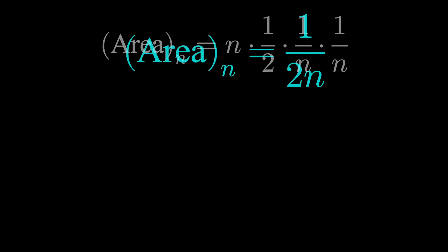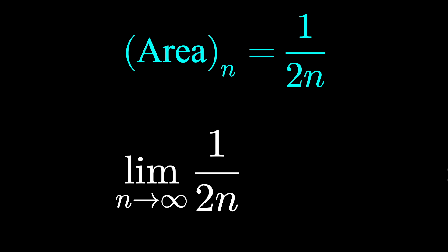In other words, the area of the nth iteration of our process is 1 over 2n. And we can see this area shrink to 0 by taking the limit out to infinity. Thus, we conclude that the staircase path does indeed approach the diagonal path.